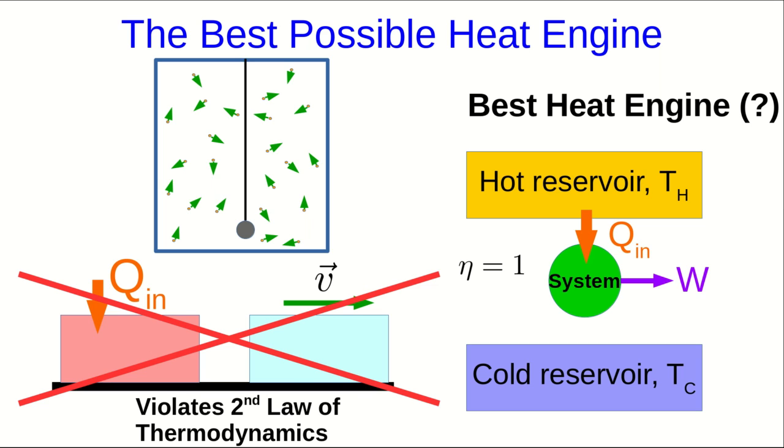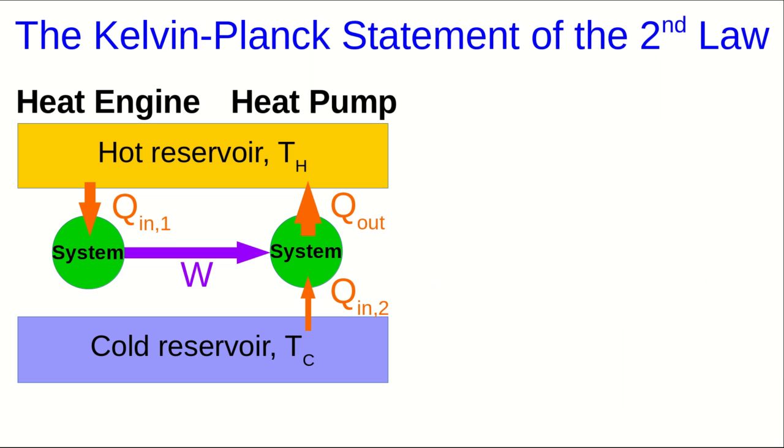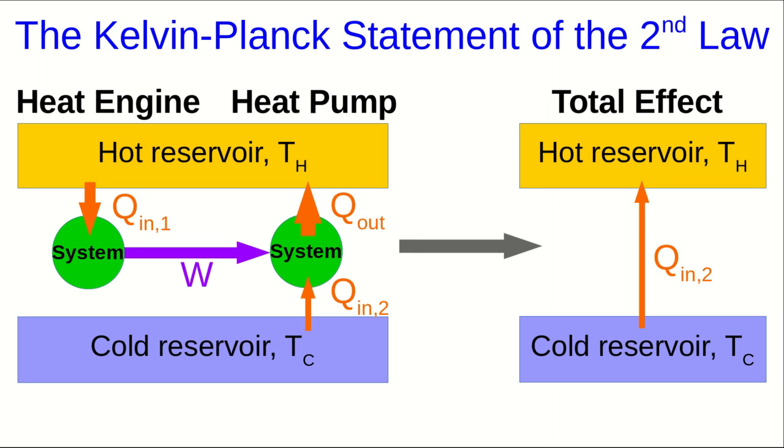Imagine we take our heat engine with an efficiency of one and use it to drive a heat pump. We're taking some energy in from the hot reservoir into the heat engine. All of that is converted to work, which is given to the heat pump, which transfers some thermal energy from the cold reservoir to the hot. But recognize that the net effect of all this is just a flow of thermal energy from the cold reservoir to the hot.